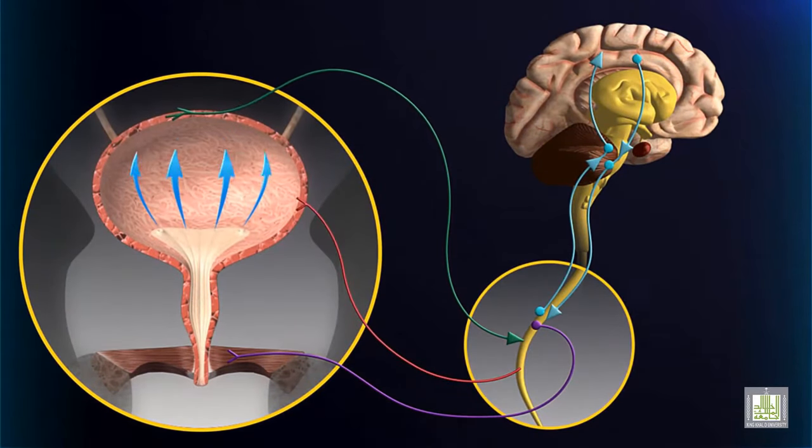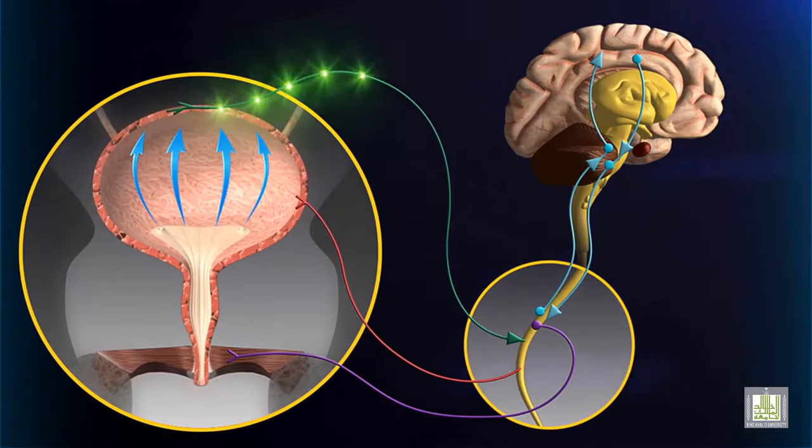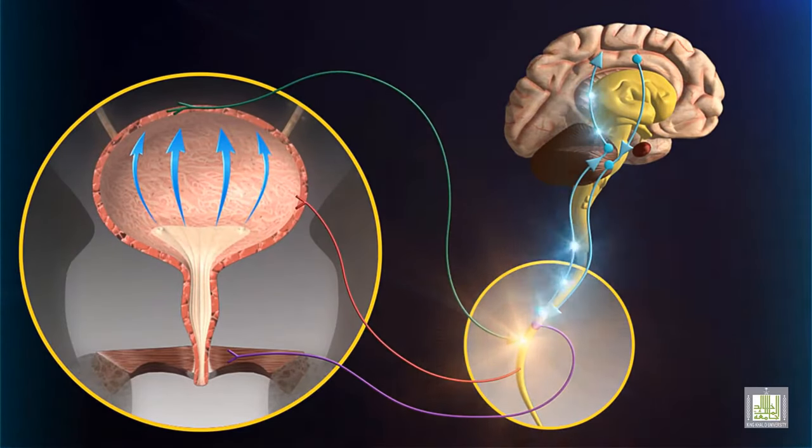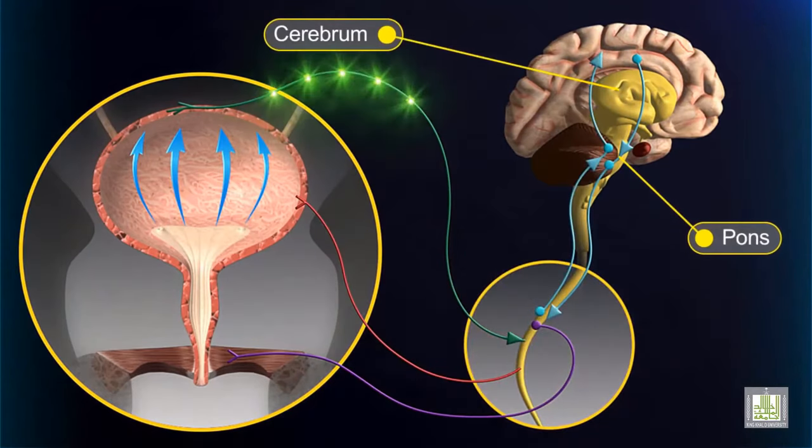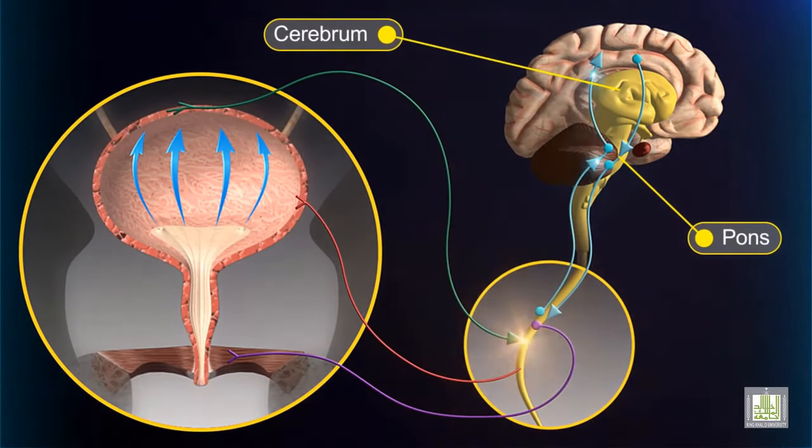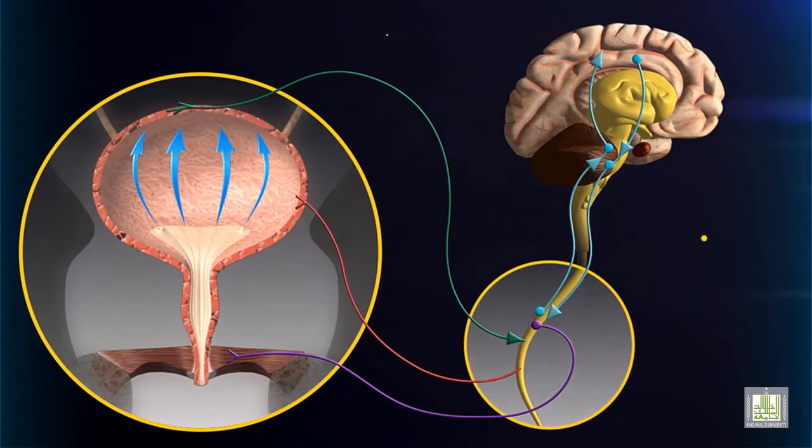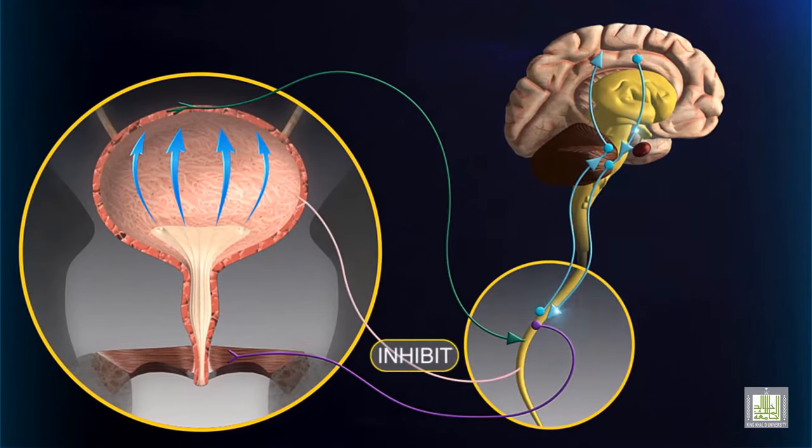The sensory signals to the sacral region of the spinal cord also stimulate ascending pathways to the pons and cerebrum, which results in a conscious desire to urinate. If urination is not convenient at the time, the brain sends impulses down the spinal cord to inhibit the micturition reflex.